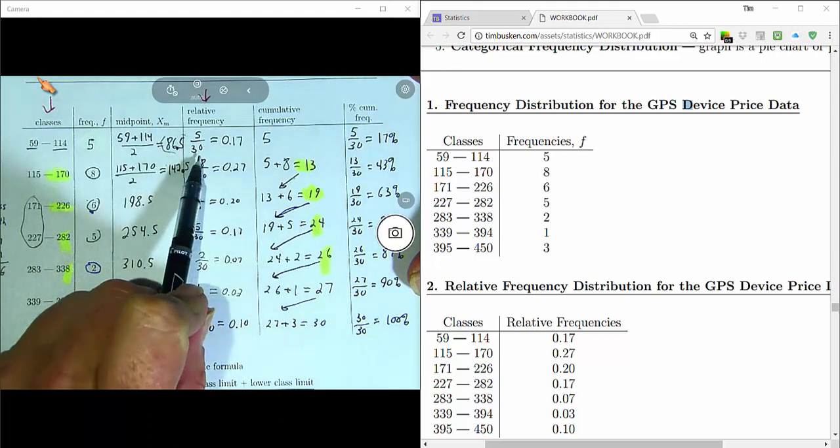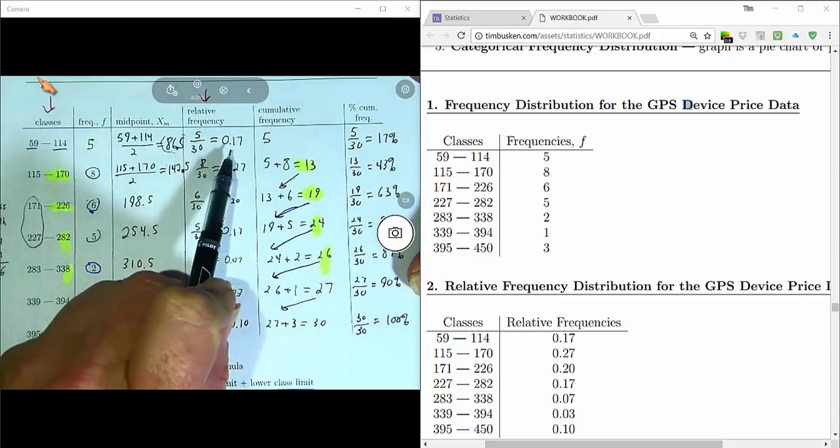So the relative frequency or the percentage frequency of that class is 5 divided by 30, the frequency of the class divided by the sample size, or 17%.